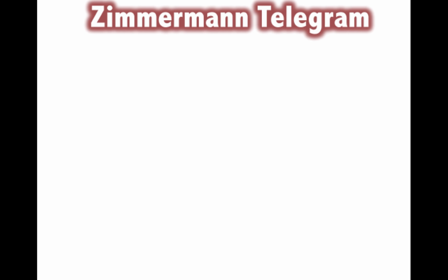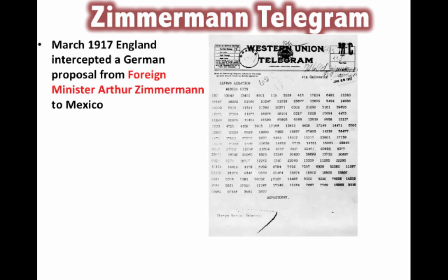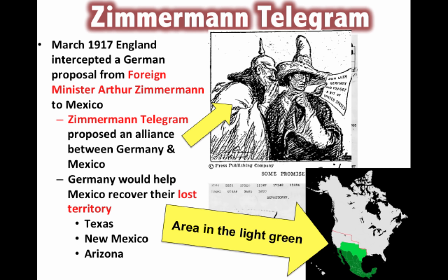Another major event then occurred: the Zimmermann Telegram — really the overt act of Germany sticking it to the United States. In March of 1917, England intercepted a German proposal from Foreign Minister Arthur Zimmermann addressed to Mexico. The telegram was encoded, but England broke the code. Its contents revealed a proposed alliance between Germany and Mexico.